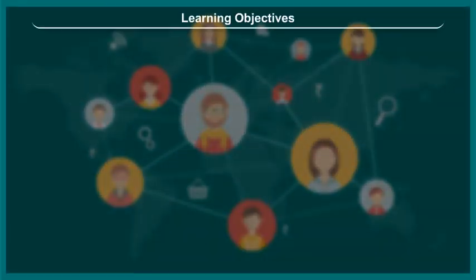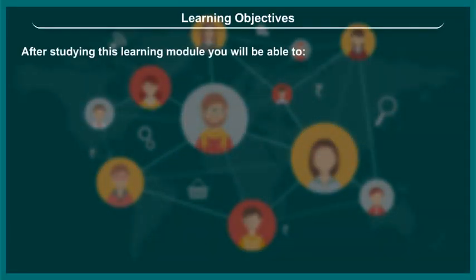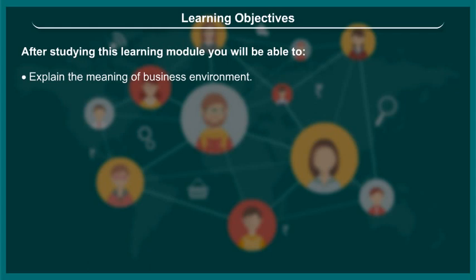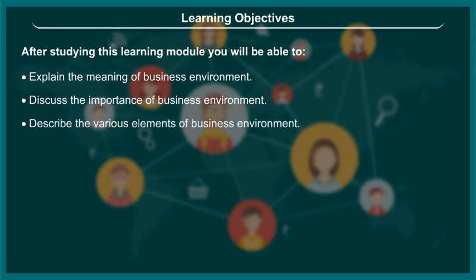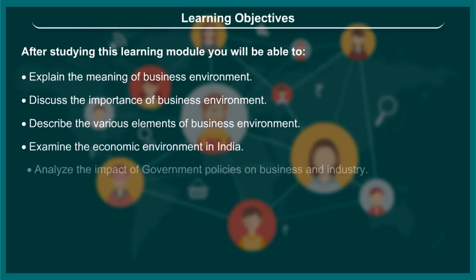Learning Objectives: After studying this learning module, you will be able to explain the meaning of business environment, discuss the importance of business environment, describe the various elements of business environment, examine the economic environment in India, and analyze the impact of government policies on businesses and industry.